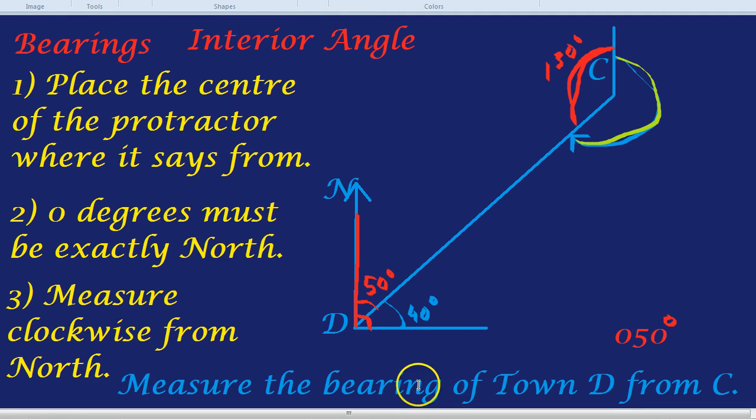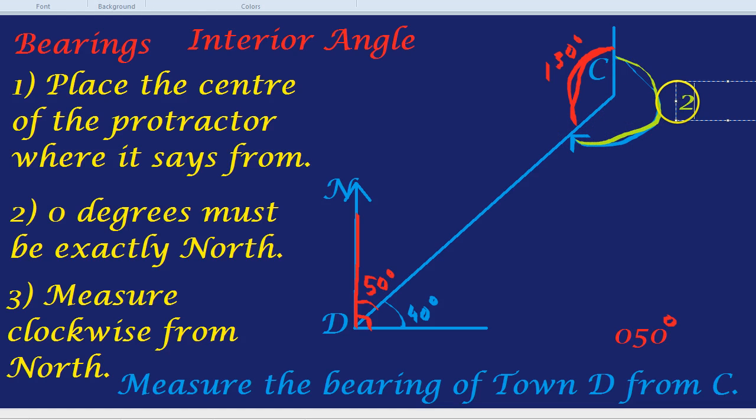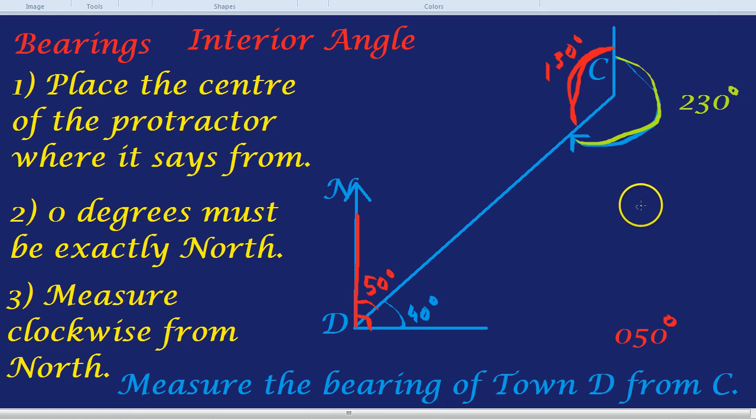So, the bearing, the actual answer to the question the bearing of town D from C we started at C, 0 was north we went clockwise and so we're facing D and that angle was 230 degrees. I know it can sometimes seem complicated but there's three key things you need to remember with bearings. They will always give you a place you're measuring from. Place the centre of the protractor where it says from.